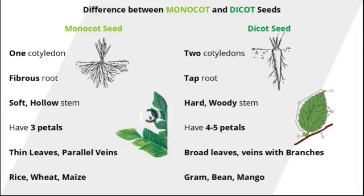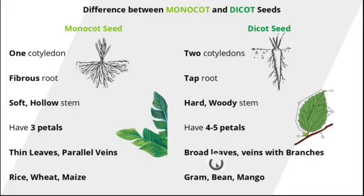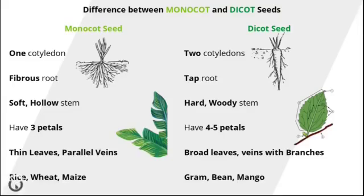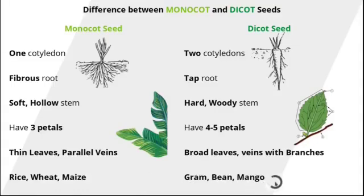The leaves of dicot plants have veins with branches. The examples of monocot seeds are rice, wheat, and maize, whereas gram, bean, mango, and rose are some of the examples of dicot seeds.